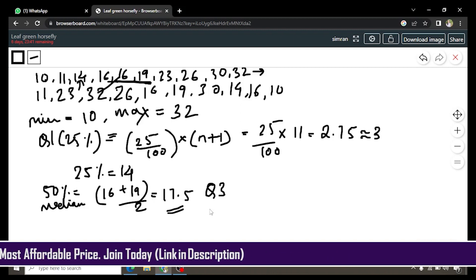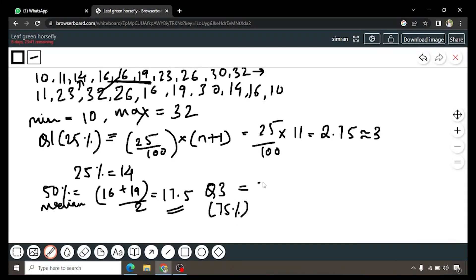Similarly, for the third quartile which is 75 percent, the formula is 75 upon 100 into n plus 1 which is 11. By solving you will get it as 8.25 which is equal to 8. So the eighth value over here is 26. So 26 is the Q3 value.